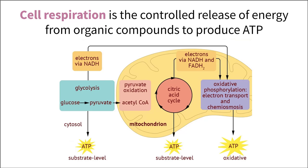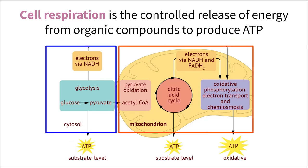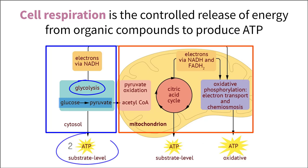The steps of cellular respiration happen in two places: in the cytoplasm of the cell and within the mitochondria. The first step is glycolysis, where a glucose molecule is broken down into two pyruvate molecules and two ATP molecules are produced.